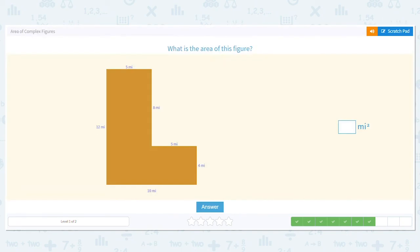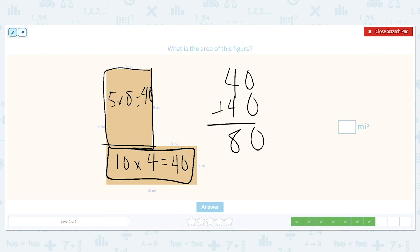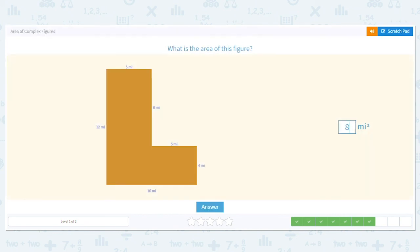Next one. Alright, I'm going to slice it this way. So my first rectangle is 10 times 4, which equals 40. And my other rectangle is 5 times 8, which equals 40. So I add 40 plus 40, which gives me 80. This is 80 square miles.